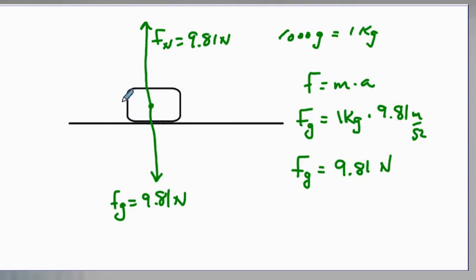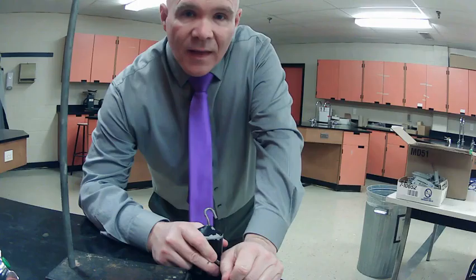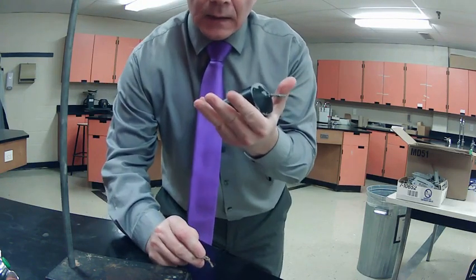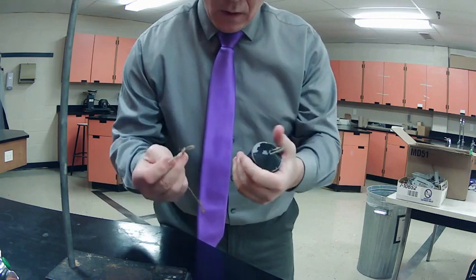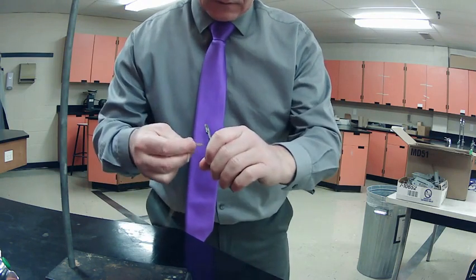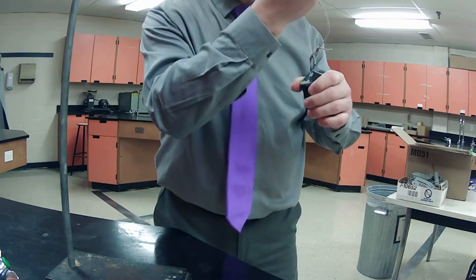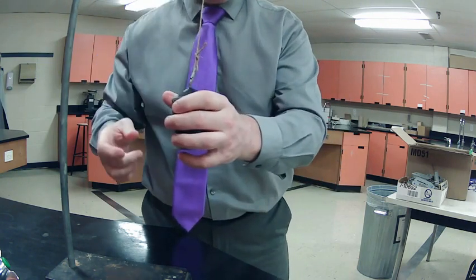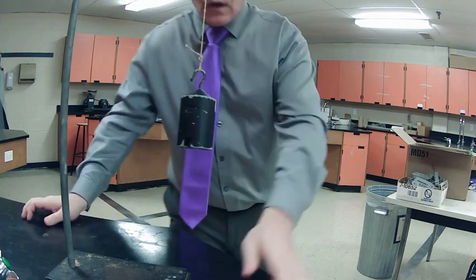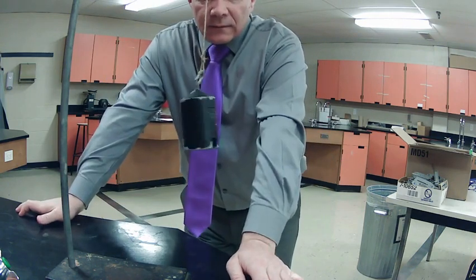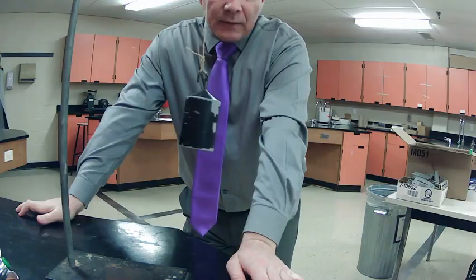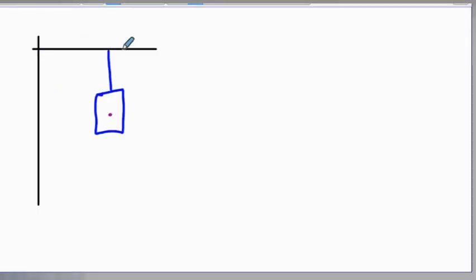Next, I'm going to take the same 1,000 gram mass but instead of setting it on the desk, I'm going to hook it onto a string and dangle it. We haven't done one of these yet — can you draw a free body diagram? I've drawn a little stand on my workbench and in blue I've got the string coming down attached to my weight.